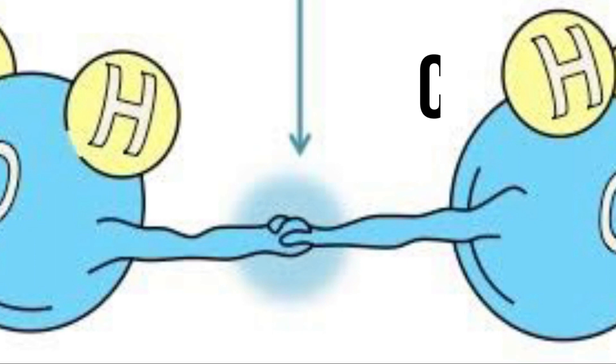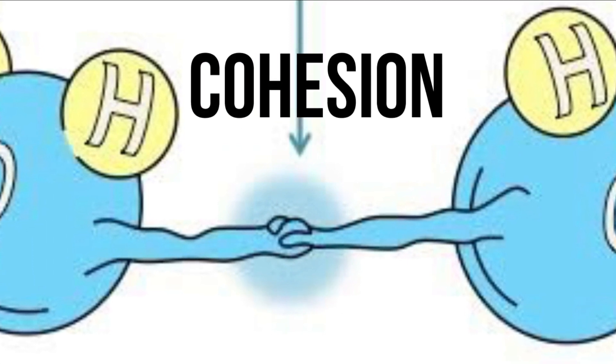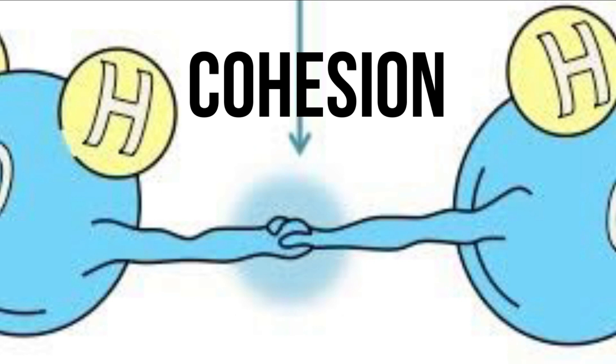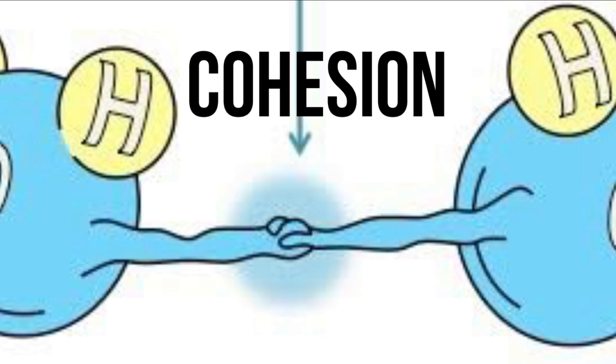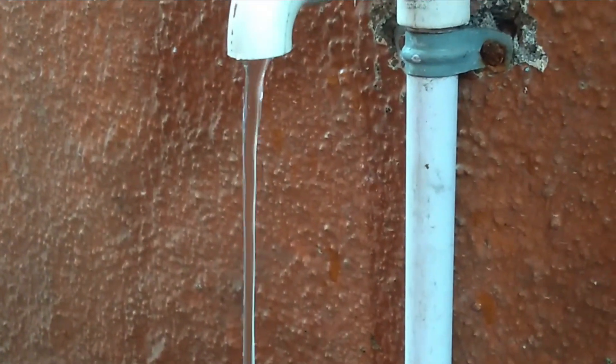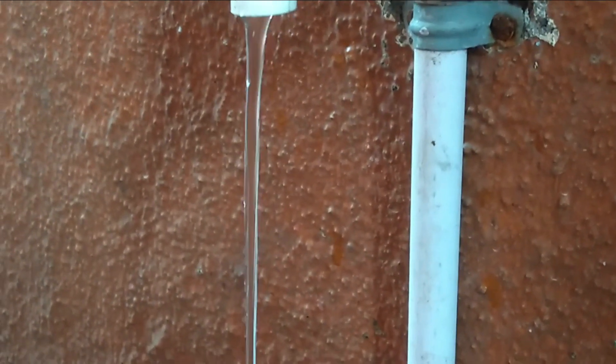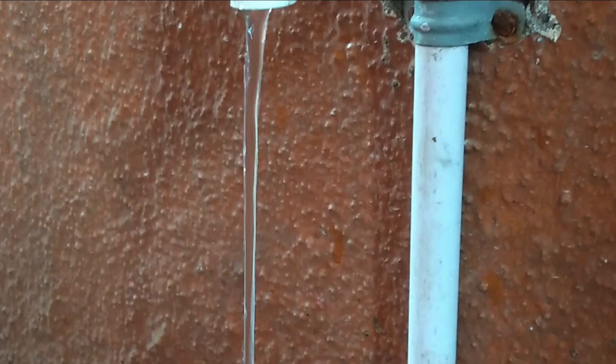In simple words, cohesion is an attraction between similar molecules forming a steady shape. As you can see, a steady water stream coming out of the tap — this is the property of water molecules to remain bounded and form a steady stream, known as cohesion.